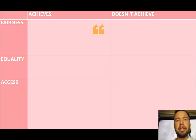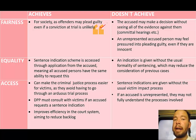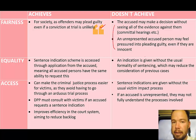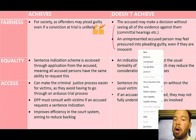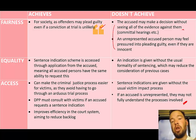In terms of plea negotiations, sentence indications, and our principles of justice: fairness — if we can get a guilty plea even when conviction is unlikely, that's good for society, that's fair in that someone faces some kind of sanction for the wrong they committed. However, of particular concern is if an accused person is unrepresented — they don't have a lawyer. They might be pressured into pleading guilty in plea negotiations without having all the possible information, or they may not fully understand what's happening. So there are real access issues when an accused person is unrepresented.